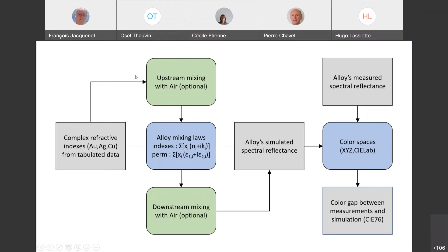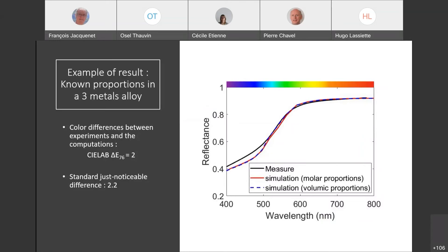So after these steps, we have an effective index for the alloy, which we can use to simulate the spectral reflectance. Then we want to compare our simulation with reality. We compute both the simulation and the measured spectral reflectance in color spaces in CIE Lab, so we can obtain the color difference between them.